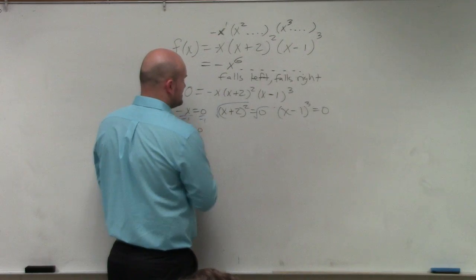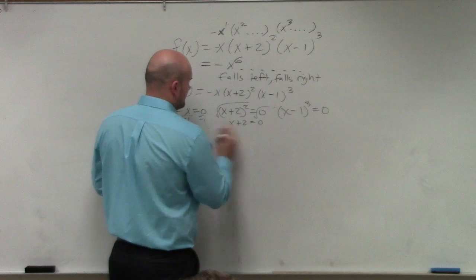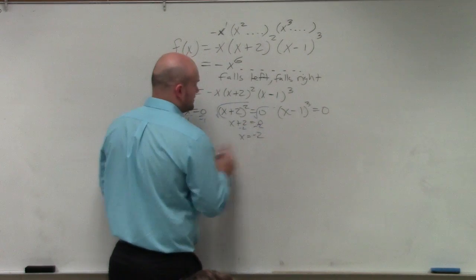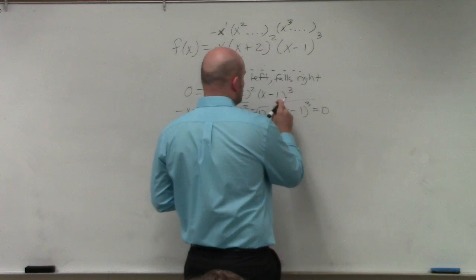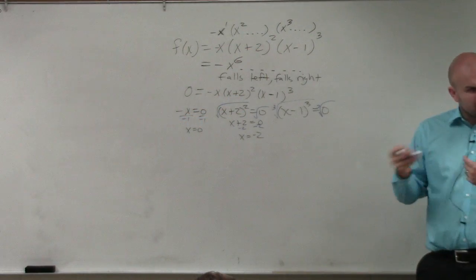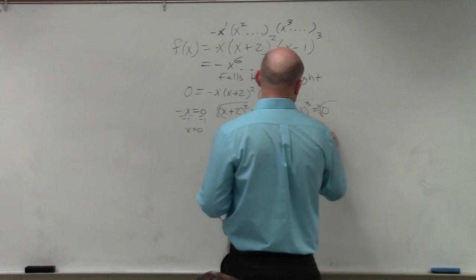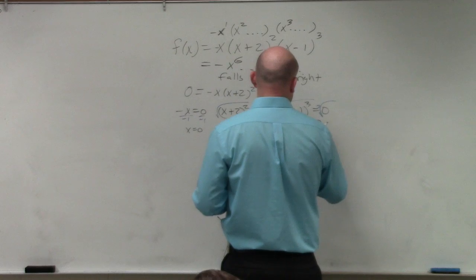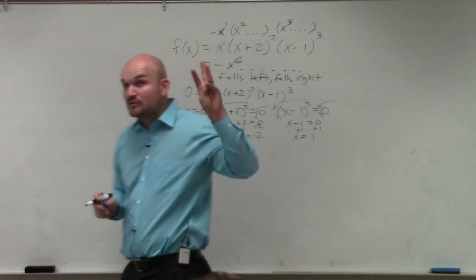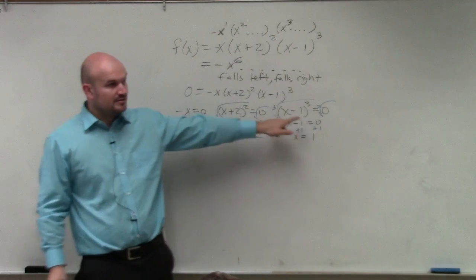Take the square root of both sides, x plus 2 equals 0. So therefore, subtract the 2, x equals negative 2. Take the cube root of both sides. Remember, you have to take the cube and the square root first before you can do anything inside the parentheses. So therefore, I get x minus 1 equals 0, plus 1, x equals 1. So therefore, I have three zeros. My three zeros are 0, negative 2, and 1.